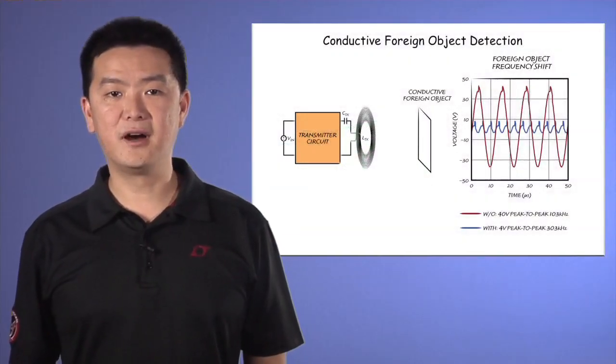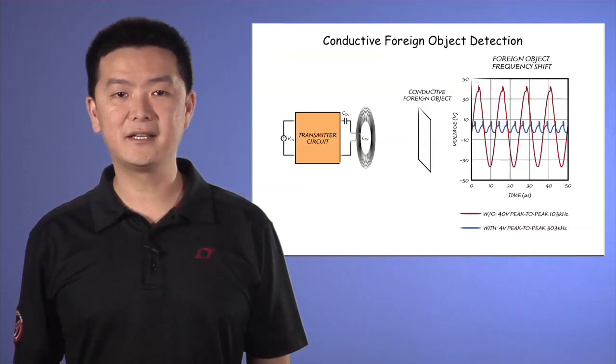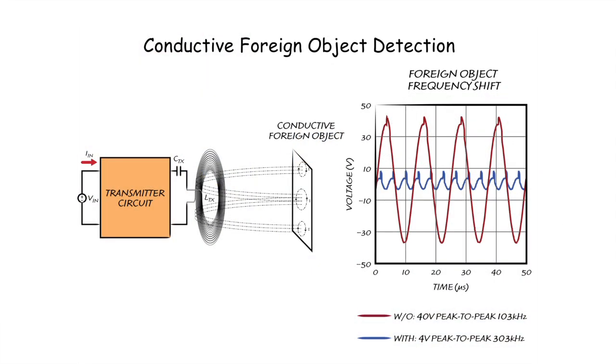Another essential feature of any viable wireless power transmit circuit is the ability to detect the presence of a conductive foreign object placed in the magnetic field generated by the transmit coil. This is important to prevent undesirable heating in that foreign object.